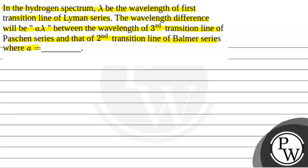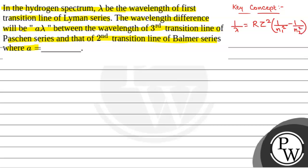We will solve this question. The key concept used to solve this question is: 1/λ = R·Z² · (1/N1² − 1/N2²). Here, N1 is the orbit number into which the electron is coming, and N2 is the orbit number from which the electron is coming. Z is the atomic number, λ is the wavelength, and R is the Rydberg constant.